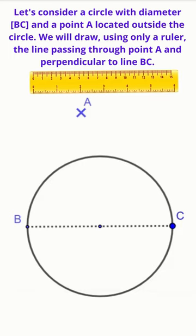Let's consider a circle with diameter BC and a point A located outside the circle. We will draw, using only a ruler, the line passing through point A and perpendicular to line BC.